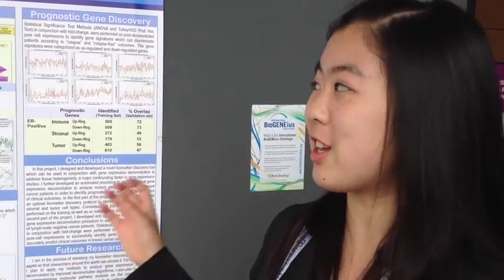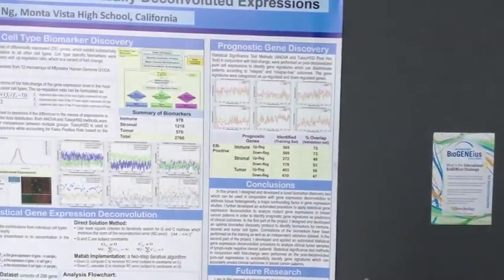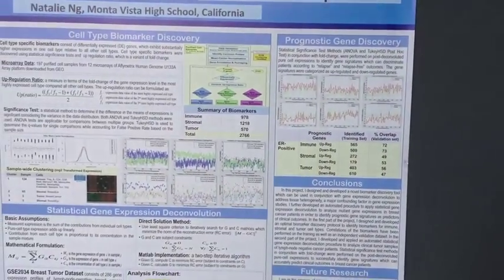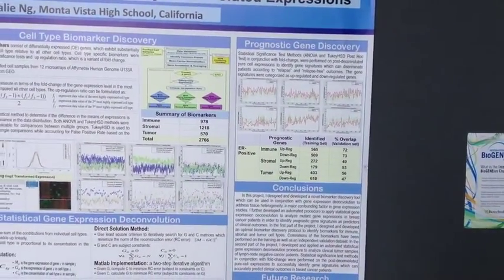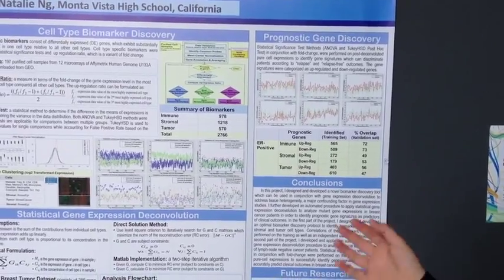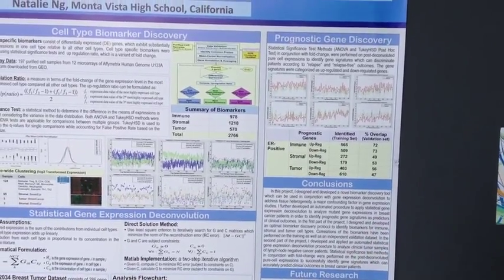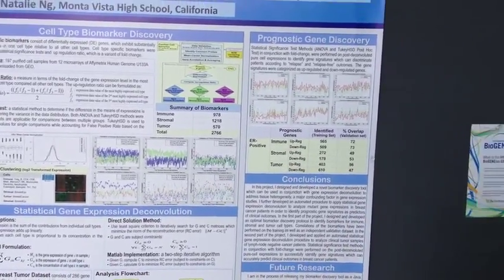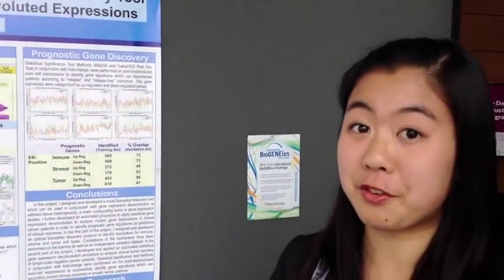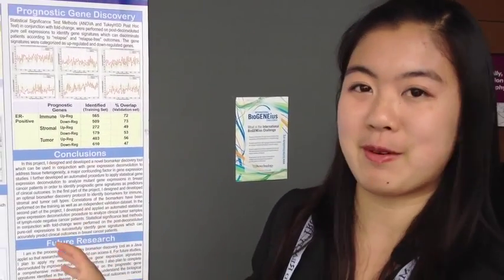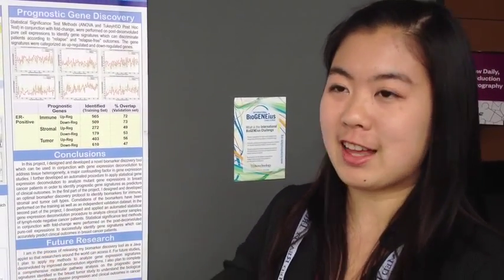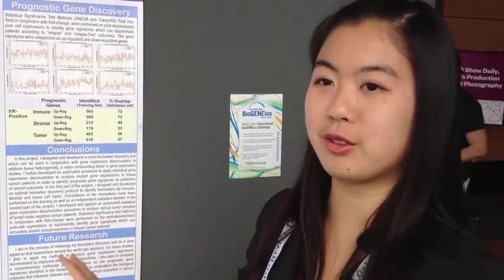In order to implement this, my project has two components. In the first part, I developed a cell type biomarker discovery tool to develop biomarkers that can differentiate immune, stromal, and tumor cell types. In the second portion, I designed and implemented my deconvolution workflow.